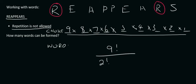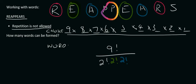Then we've got two E's, so that's going to be 2 factorial. Then we have two A's, and then we have two P's. So you do each one separately - you don't add them up. And so if you work all of this out, you would end up with 22,680.